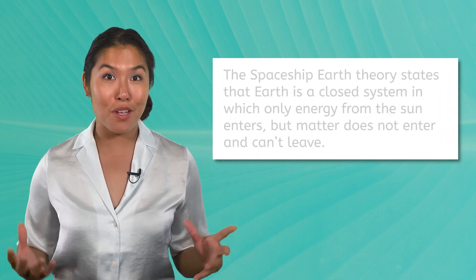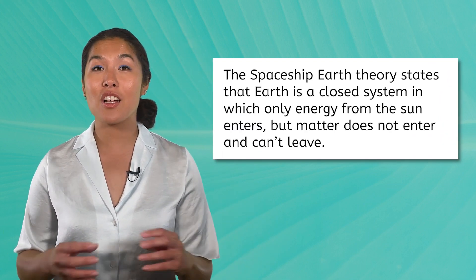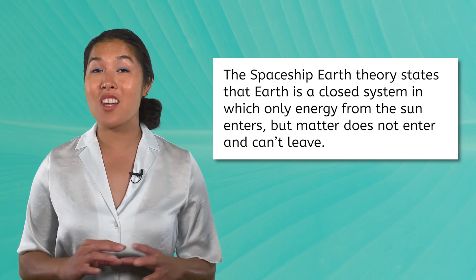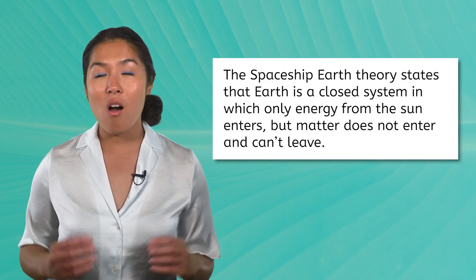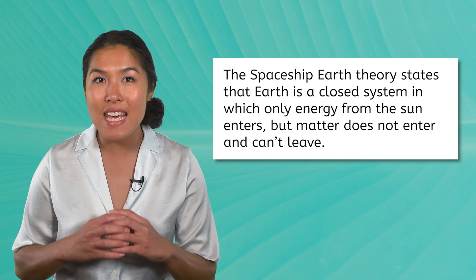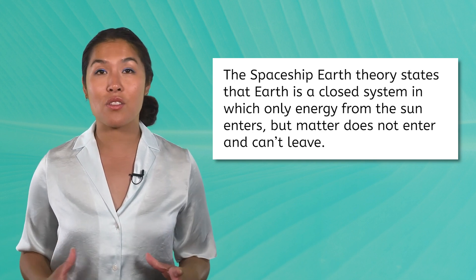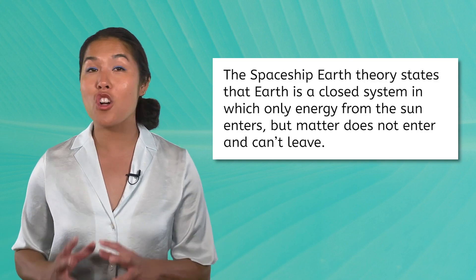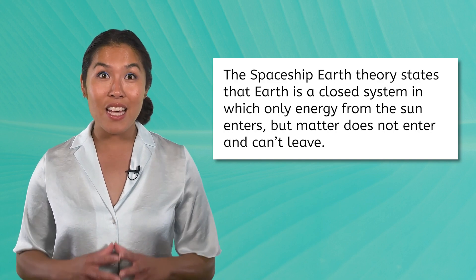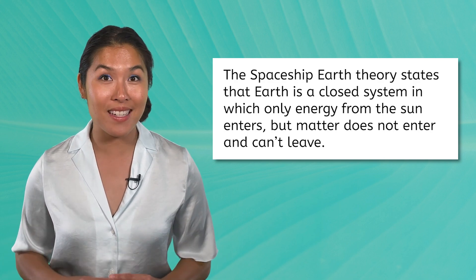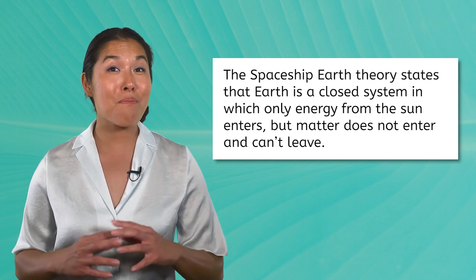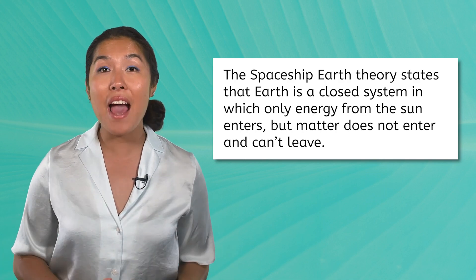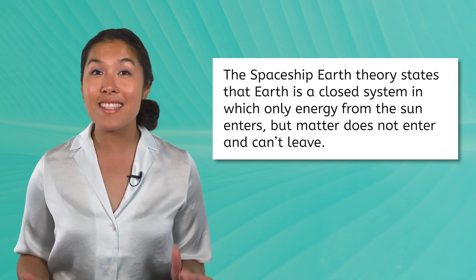If you remember back to the first lesson of the course, we discussed the spaceship Earth theory that says that Earth is a closed system. Energy from the sun enters the biosphere, but matter does not enter and it can't leave. All matter needed must come from within the biosphere, which is why processes such as the carbon cycle and water cycle are so important. All of the water, carbon, and other resources that Earth needs is already present and has been present since the Earth formed. It is impossible to get more of these resources — we can only reuse what we already have through these natural cycles and sustainability efforts.